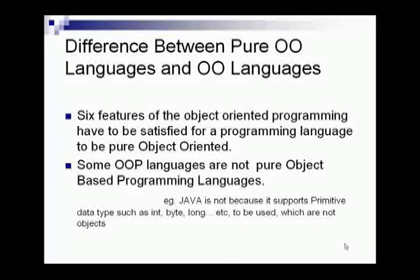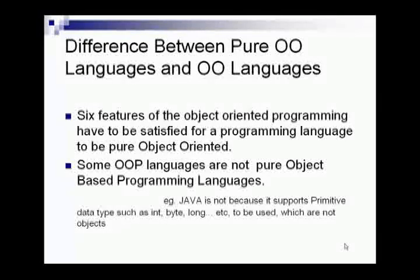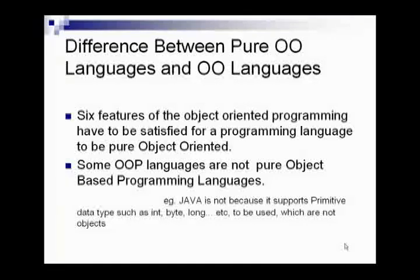Now let's look at the differences between pure object oriented languages and object oriented languages. There are several object oriented languages, but they are not actually pure object oriented languages. Those six features I have mentioned must all be satisfied for a programming language to be pure object oriented. Some object oriented languages are not pure — for example, Java is not pure because it supports primitive data types such as integer.